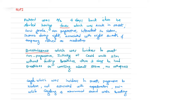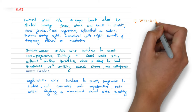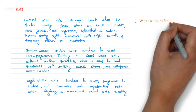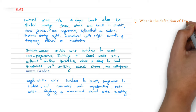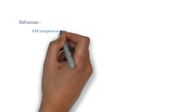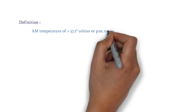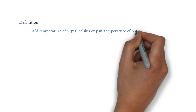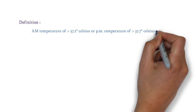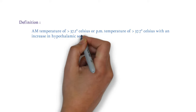What is the definition of fever? AM temperature of more than 37.2 degrees Celsius, or PM temperature of more than 37.7 degrees Celsius, with an increase in hypothalamic set point. Always say 'with an increase in hypothalamic set point.'